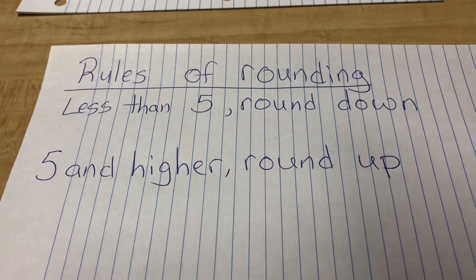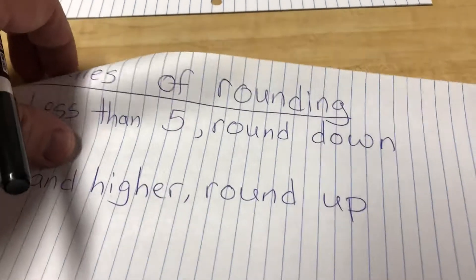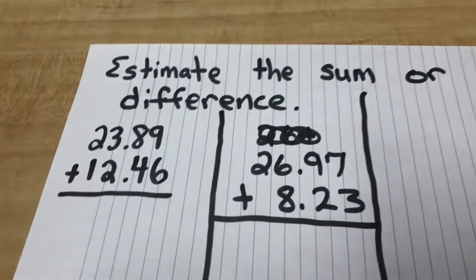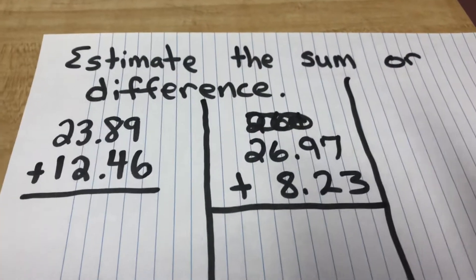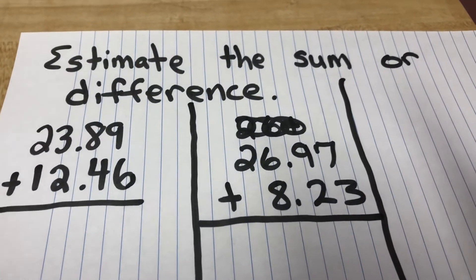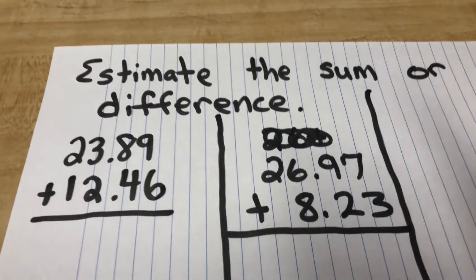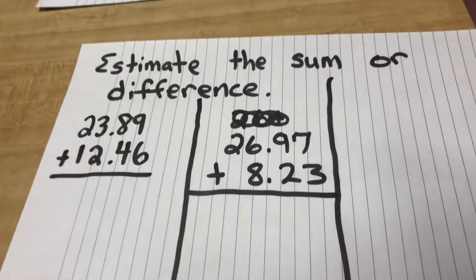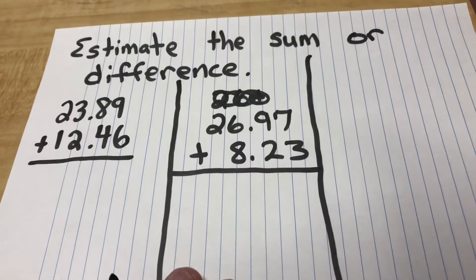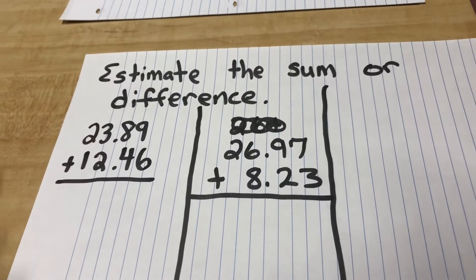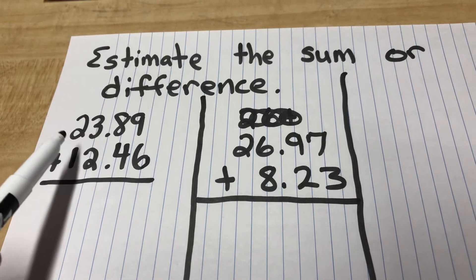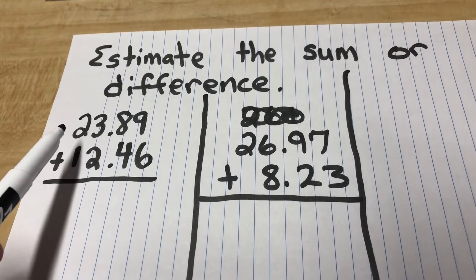Alright, so let's look at what we're going to be doing today. Your directions are going to tell you to estimate the sum or difference. You're going to be rounding things to the greatest place value — and by greatest place value, I mean you're going to look at the number way to the left, the first number way to the left, and you're going to round to that place.